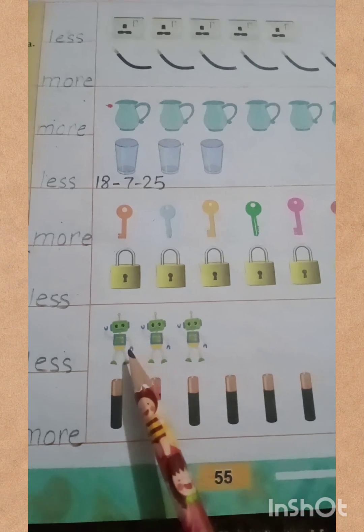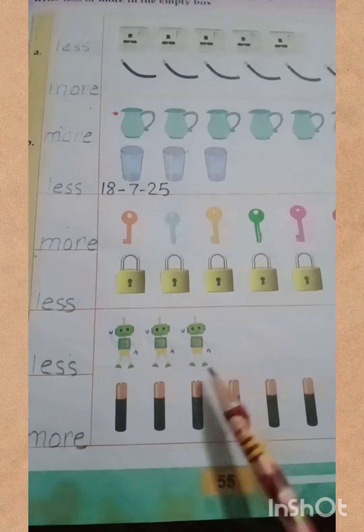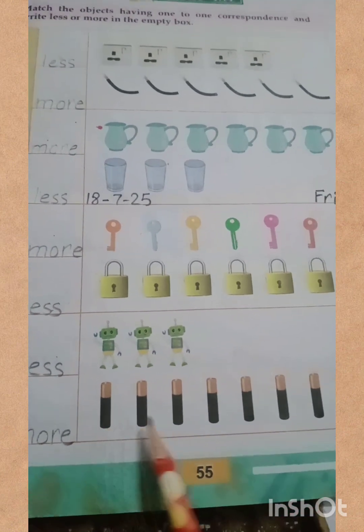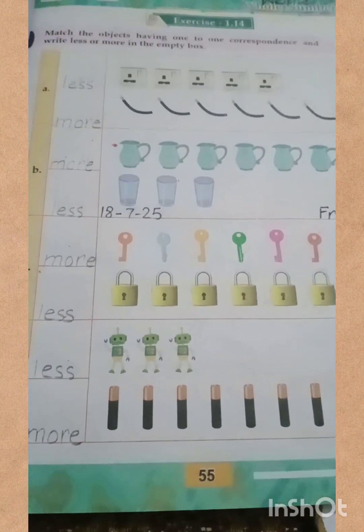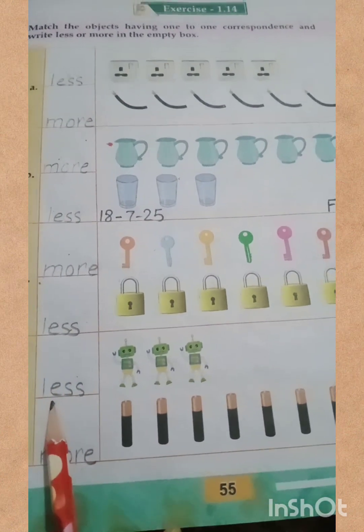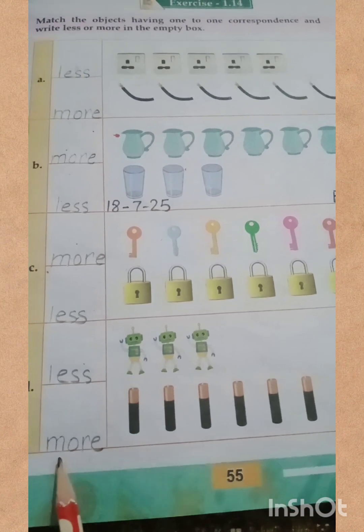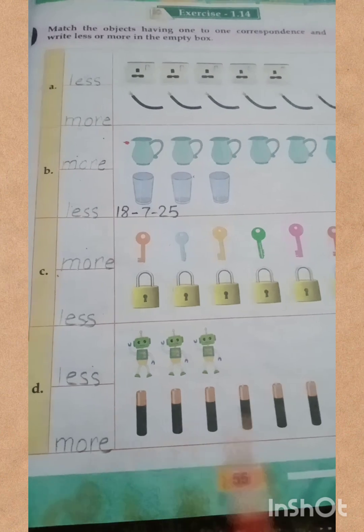My dear students, the robots are three in number and the pencils are eight in number. So we will write 'less' above the robots and we will write 'more' above the pencils.